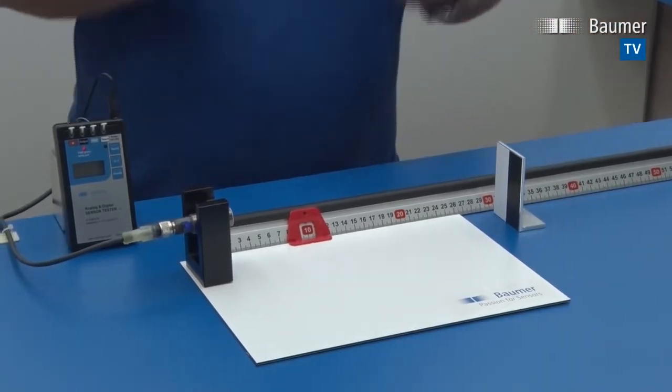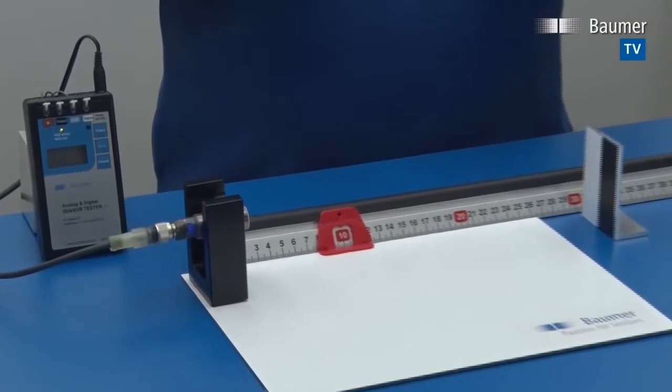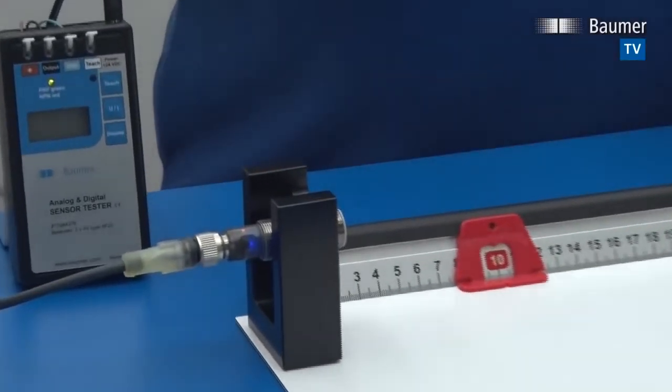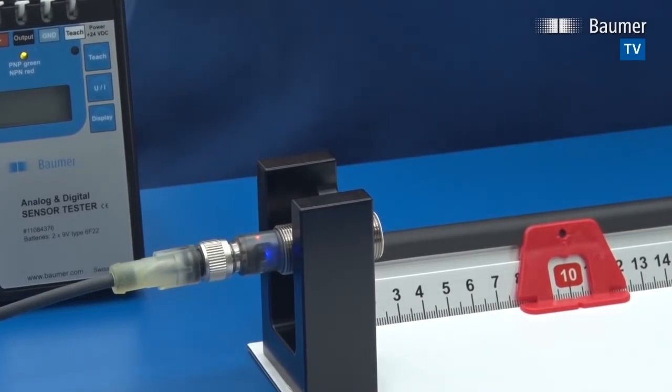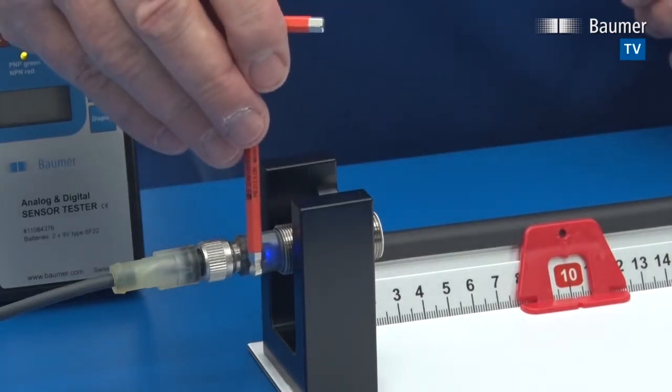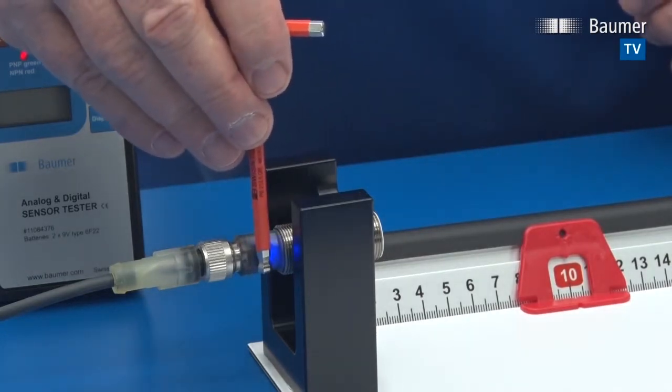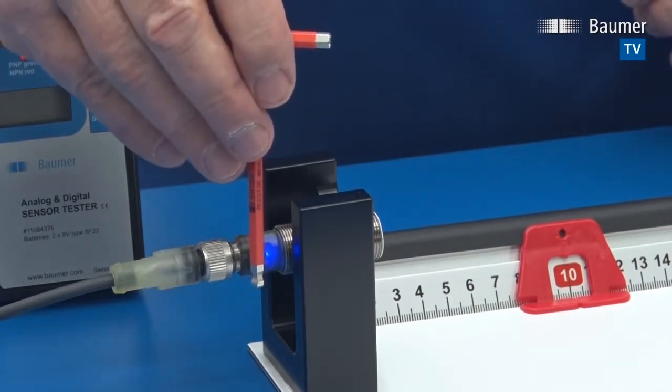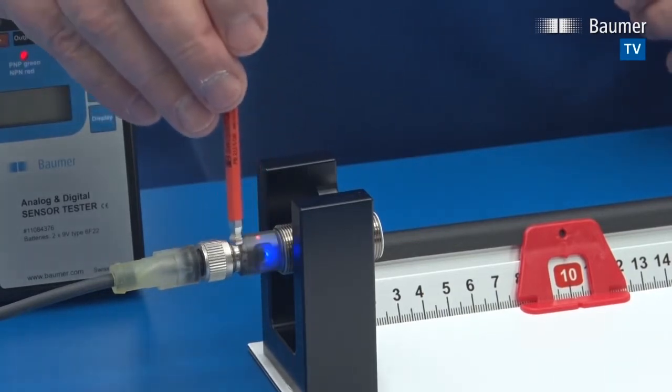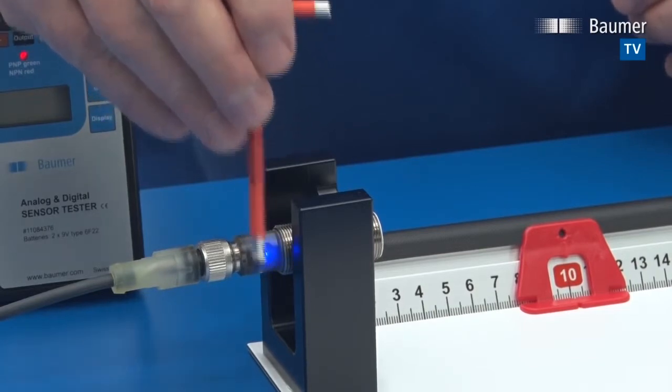The sensor is now programmed to be a normally open sensor but some applications require a normally closed configuration. So how do you teach the sensor to be normally closed? For doing that you go into teach mode again for two seconds, confirm the distance to the target again, and then teach for a second time.